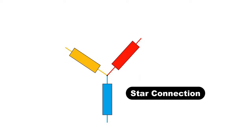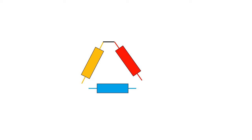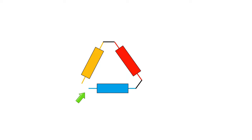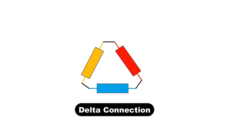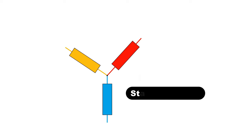Now if you want to connect motor winding in delta, then what you have to do is connect the motor windings in series. Take one end of a winding and connect with one end of another winding. Similarly, take the other end of the same winding and connect with one end of the third winding. If you connect motor winding in this way, then it will be known as delta connection. And if you connect it the other way, it will be known as star connection.